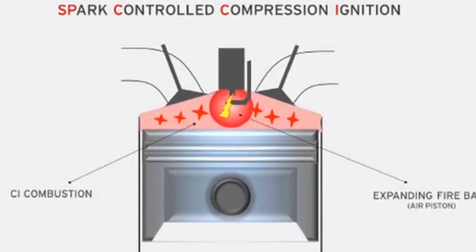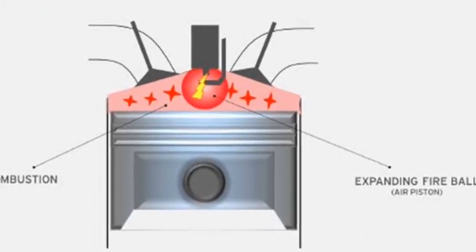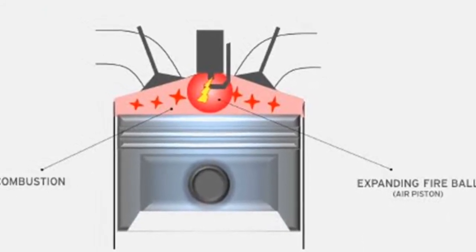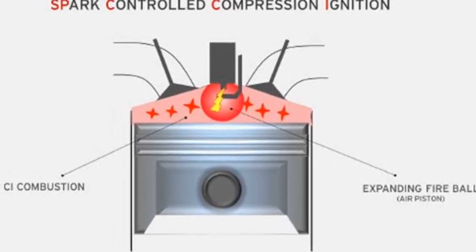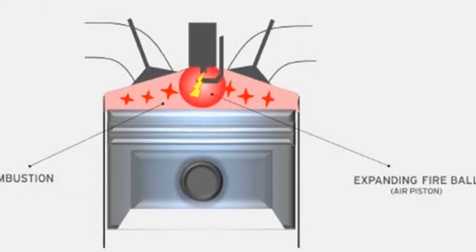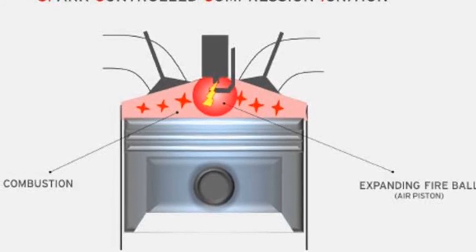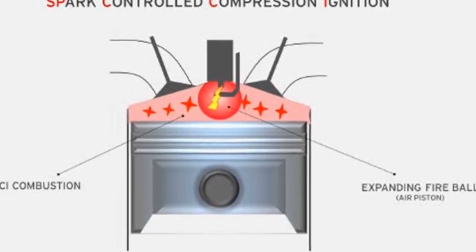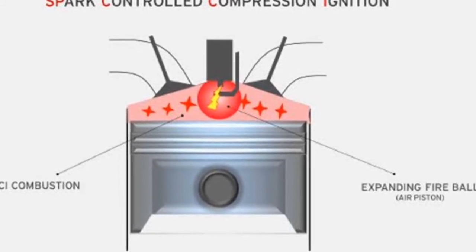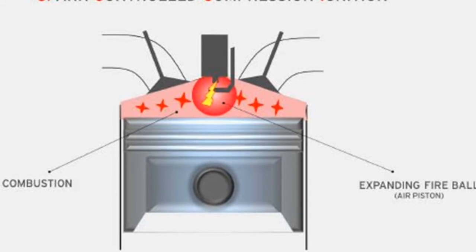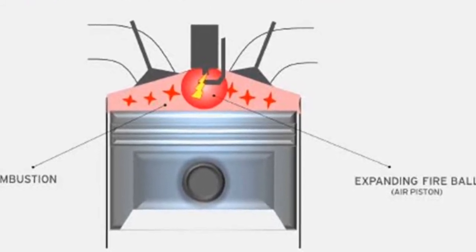The next ignition strategy is SPCCI — Spark Controlled Compression Ignition. As the name implies, there will be both spark and compression ignition. These engines always run on a lean mixture. Using a lean mixture can increase thermal efficiency, and we can use a higher compression ratio, which further increases thermal efficiency. The spark plug is used to initiate the combustion process, creating a fireball that compresses the vicinity of the mixture.